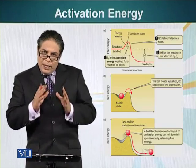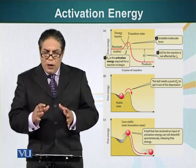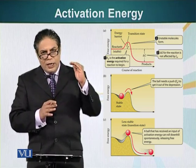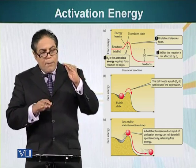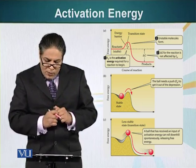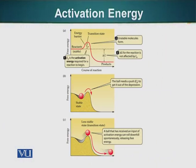To understand activation energy, we can go back to our original analogy of a ball rolling down the hill. In this case, our products are at a higher energy level and reactants are at a lower energy level, but the ball placed on the hill has to overcome a little hump, as you can see on the slide behind me. The reactants have to reach a transition state level, which is at an even higher energy level.